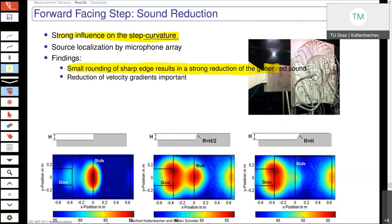That will also result in a strong reduction of the velocity gradients — and as we know, when we look at the source in the partial differential equation of Lighthill — the inhomogeneous wave equation — there we also have the gradients of the velocities. So we see for such problems the best and most effective way is to get rid of sharp edges.